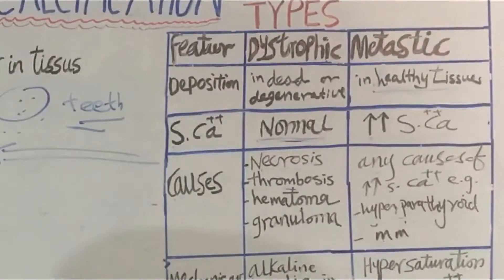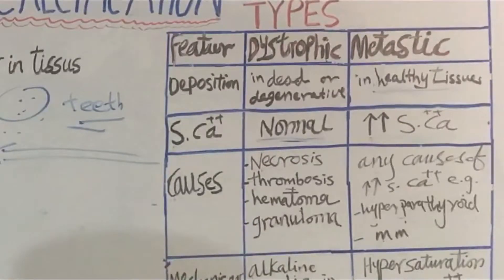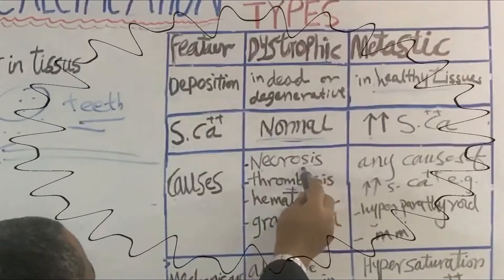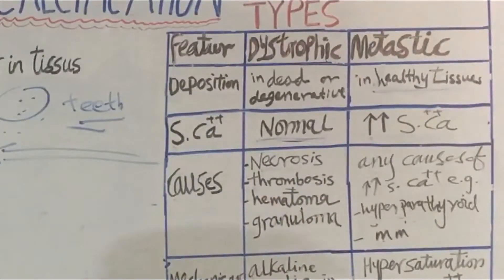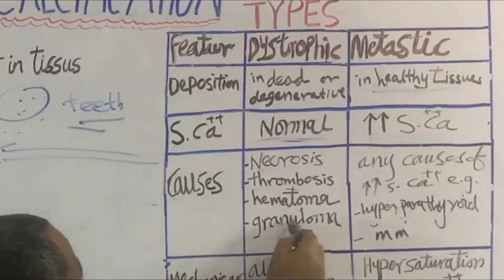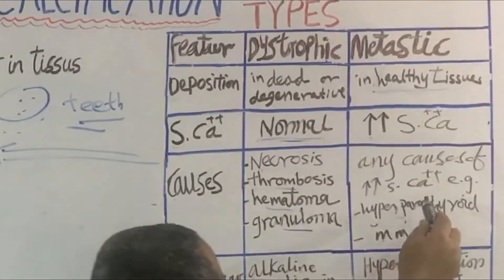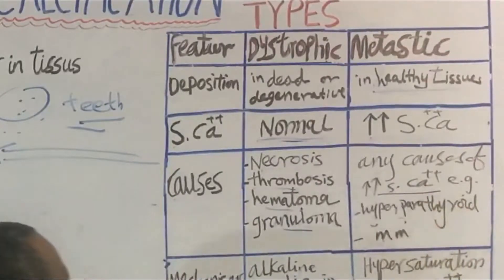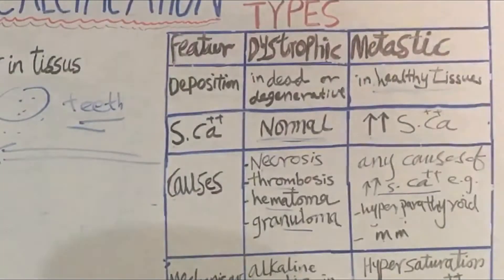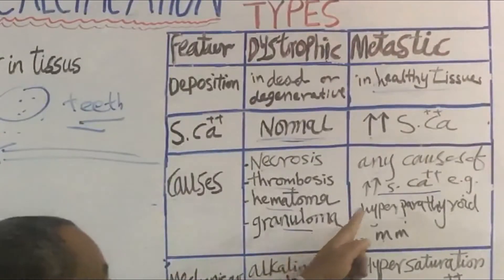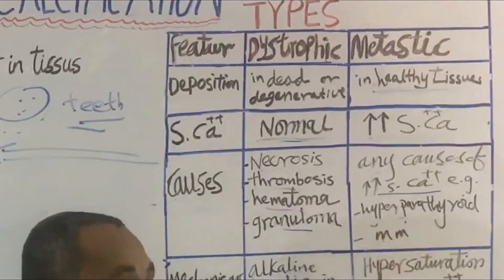The causes of the two types are totally different. Dystrophic calcification occurs on top of necrosis, thrombosis, hematomas, and granulomas. While metastatic calcification takes place when there is a high calcium level, whatever the cause — maybe hyperparathyroidism due to adenomas or other tumors, or other causes like multiple myeloma.